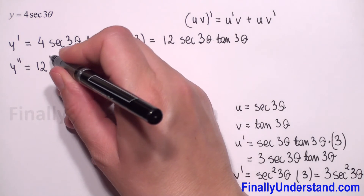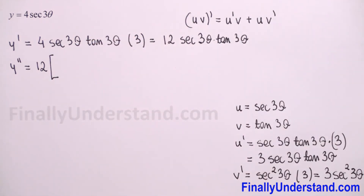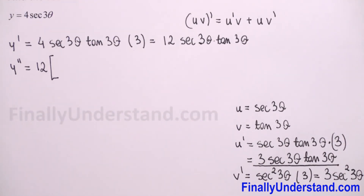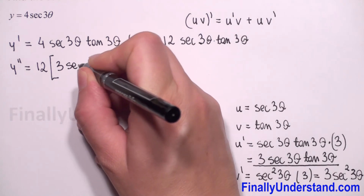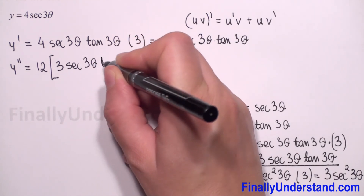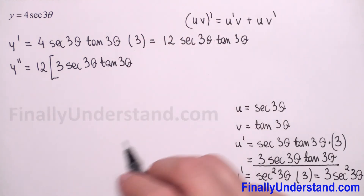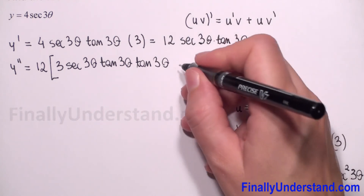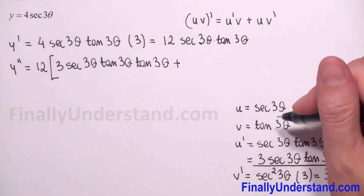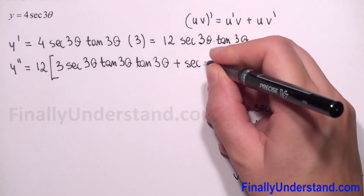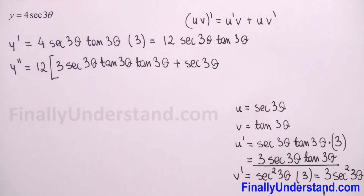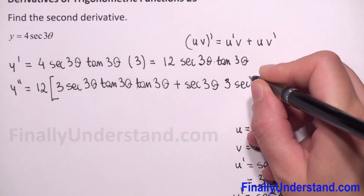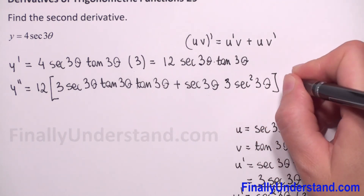Now we just replace into our function. The second derivative is 12 times, opening brackets: u' is equal to 3·secant(3θ)·tangent(3θ), times v which is tangent(3θ), plus u which is secant(3θ), times v' which is 3·secant²(3θ).